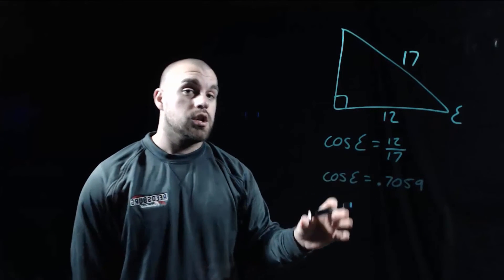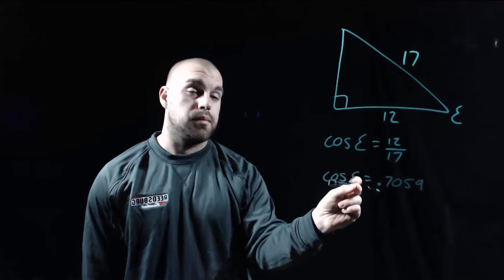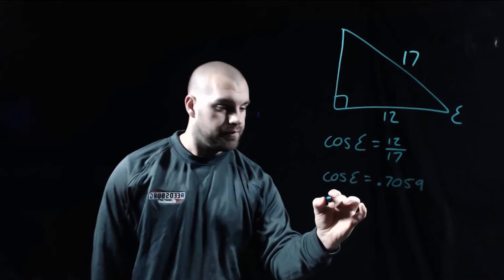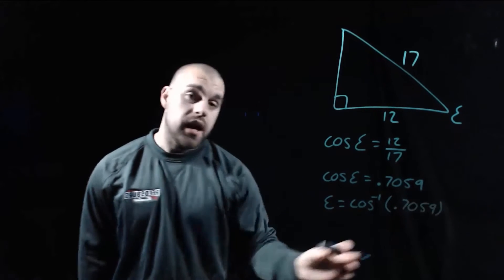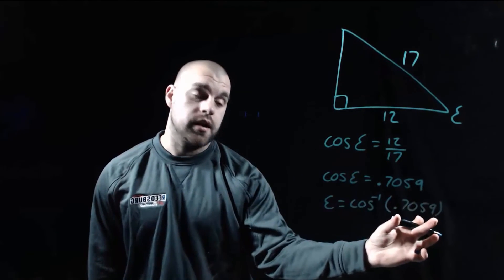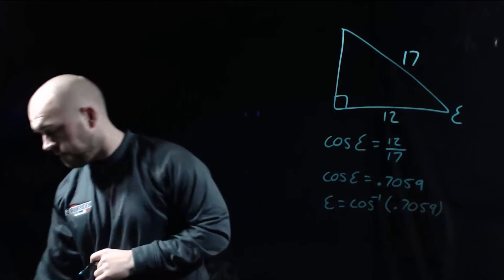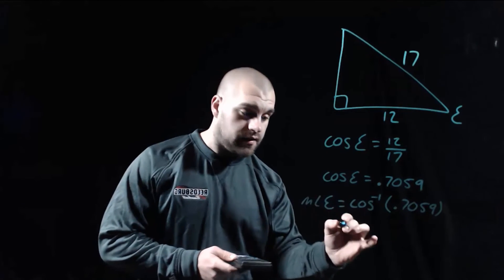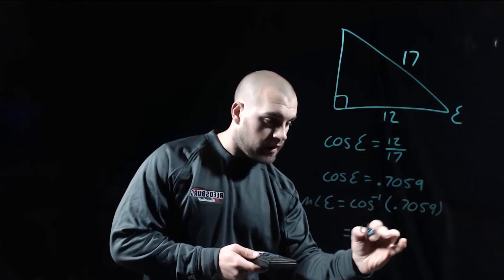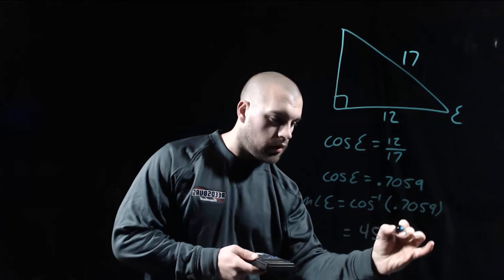Now, this is a cosine equation. So we need to use an inverse cosine to help us figure out how big angle E is. And if we type this inverse cosine of our decimal into our calculator, we get the measure of angle E to be about 45.1 degrees.